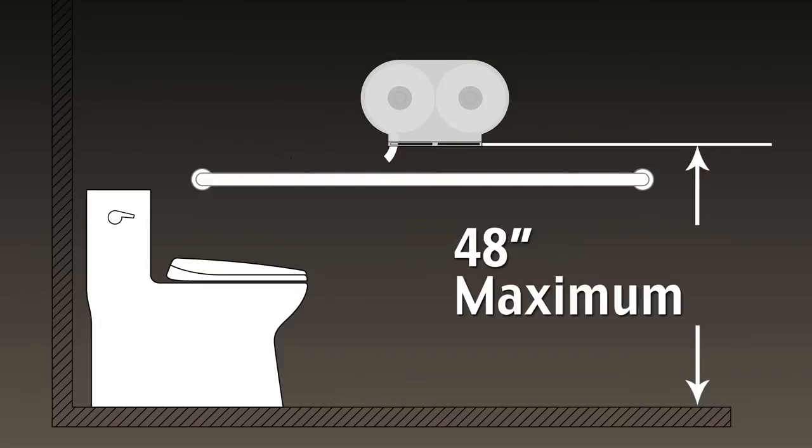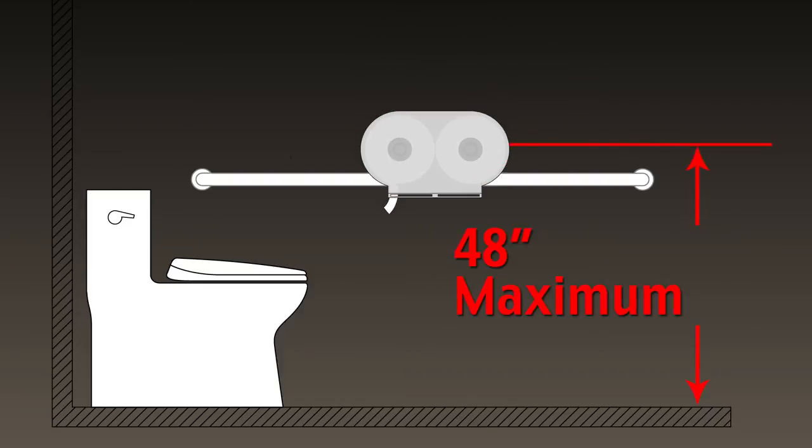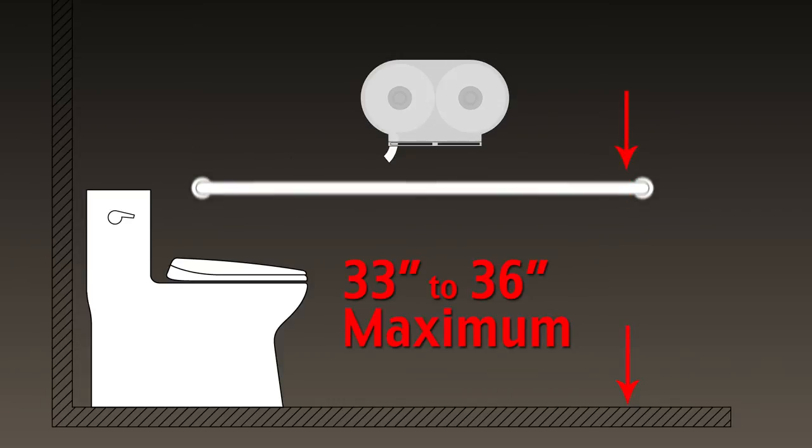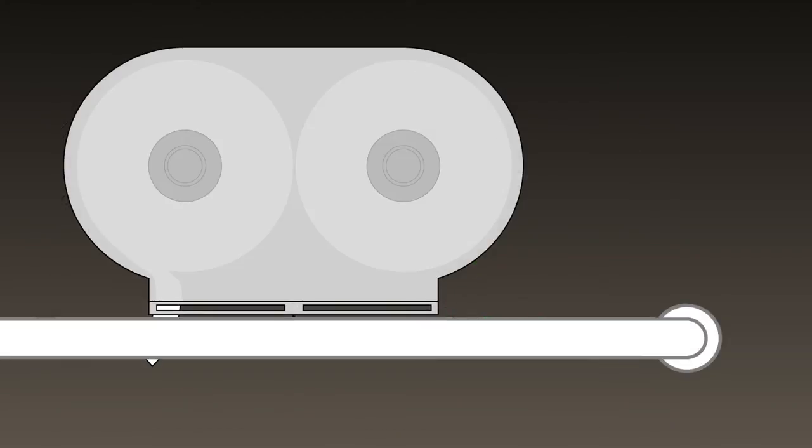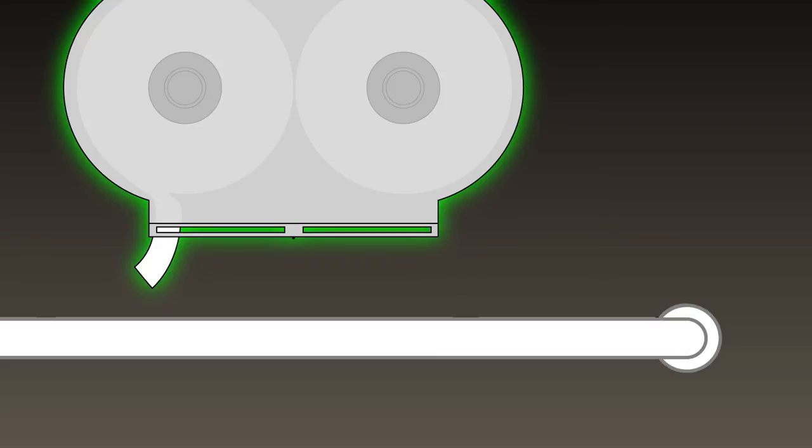If toilet paper dispensers are installed above the sidewall grab bar, the outlet of the toilet paper dispenser must be 48 inches maximum above the finished floor. The top of the gripping surface of the grab bar must be 33 to 36 inches maximum above the finished floor. Be sure to leave enough room between the grab bar and the outlet of the dispenser for the user to grab and pull the toilet paper.